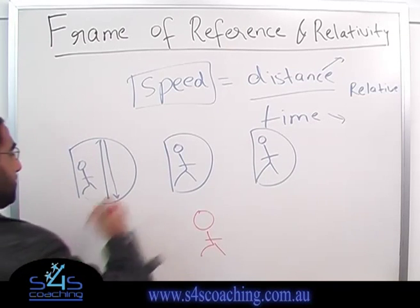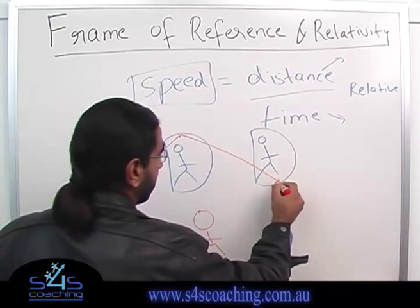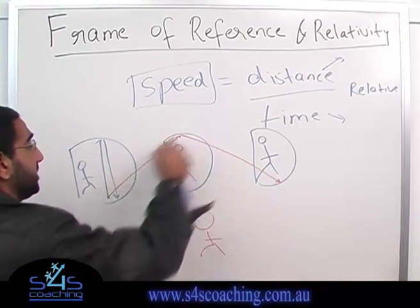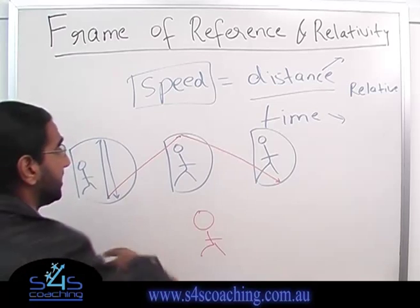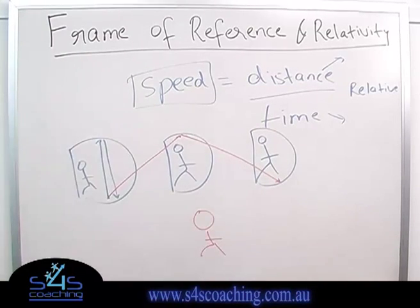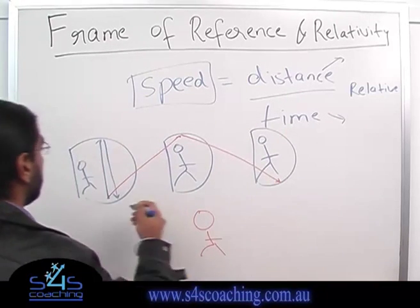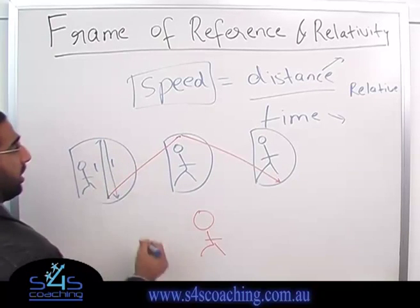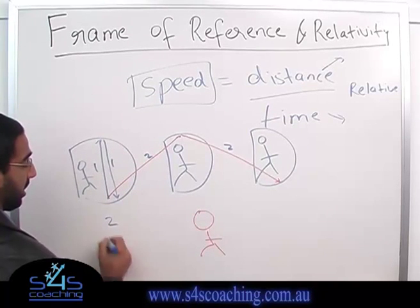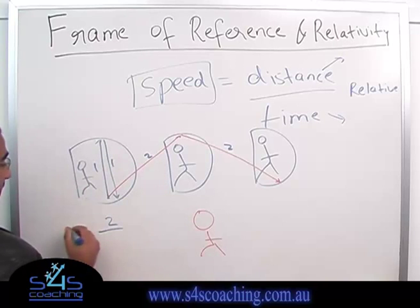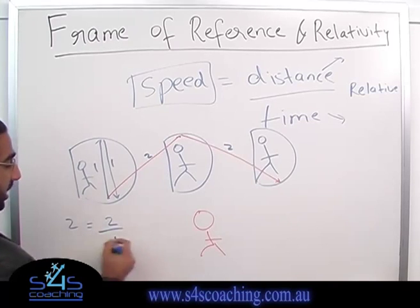When this guy views it, he actually sees this beam of light traveling there and then traveling down. We can see that this distance is obviously greater than this distance. So if the distance is greater, the time should change. Let's say that this distance is 1 and 1, and then this distance is 2 and 2. So this total distance is 2, and let's say that the speed is 2 as well, which means that the time it takes for the person inside is 1 second.